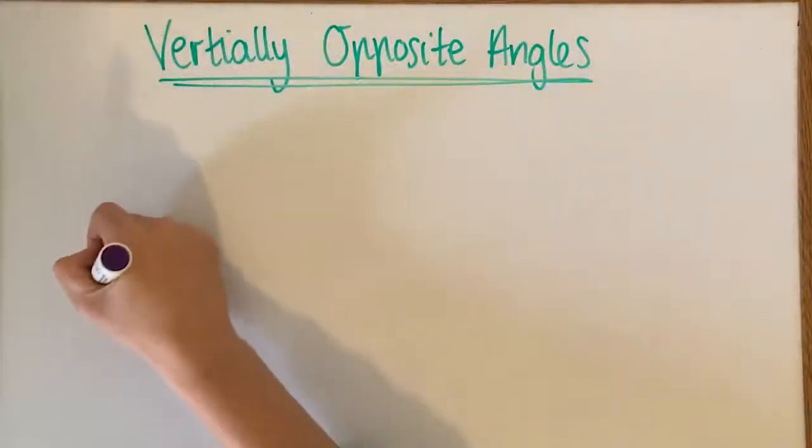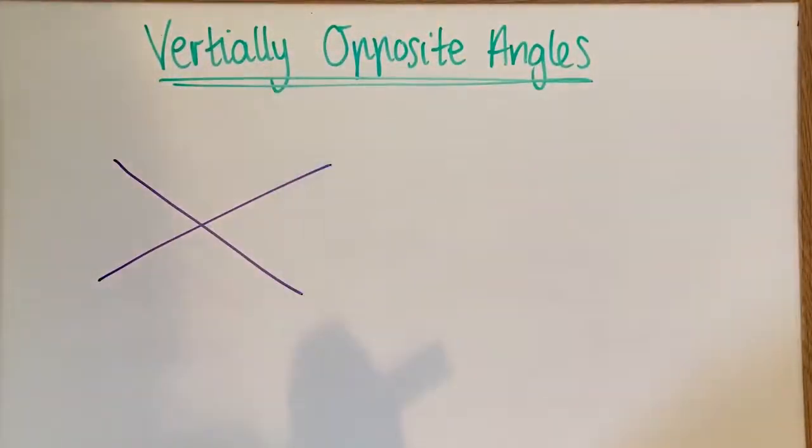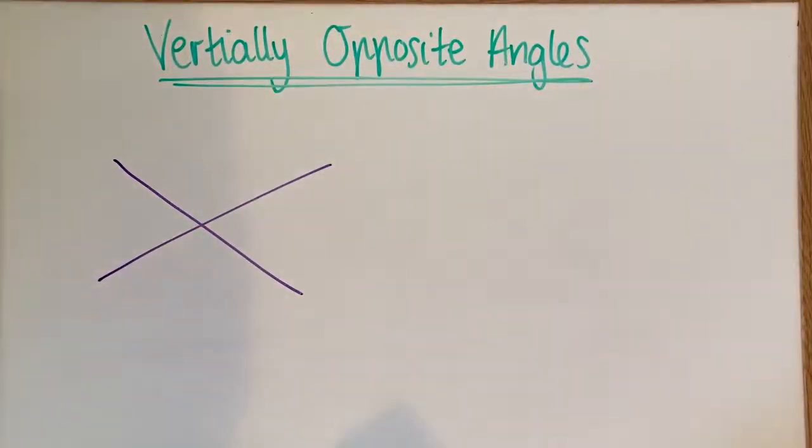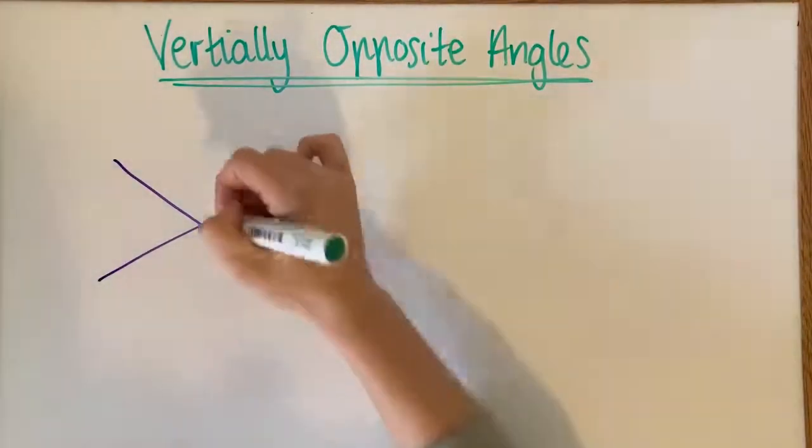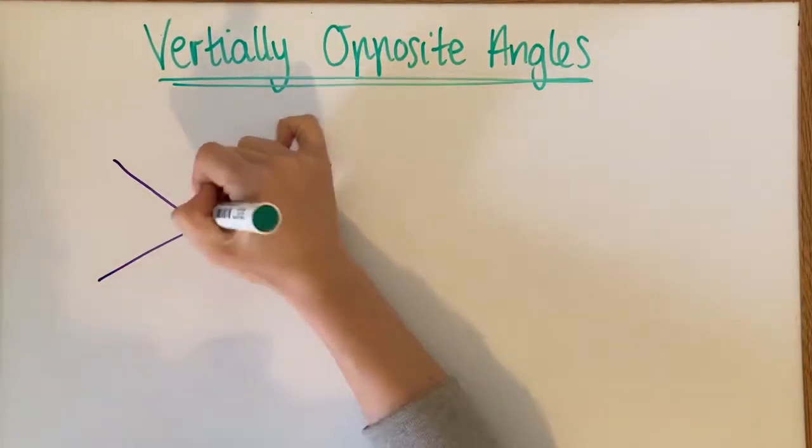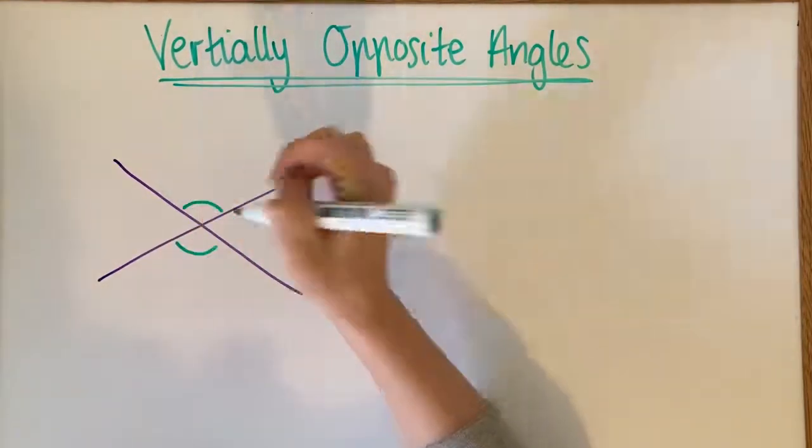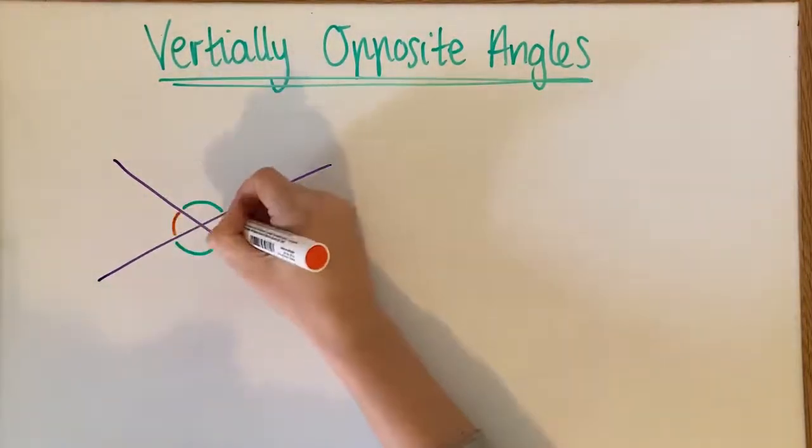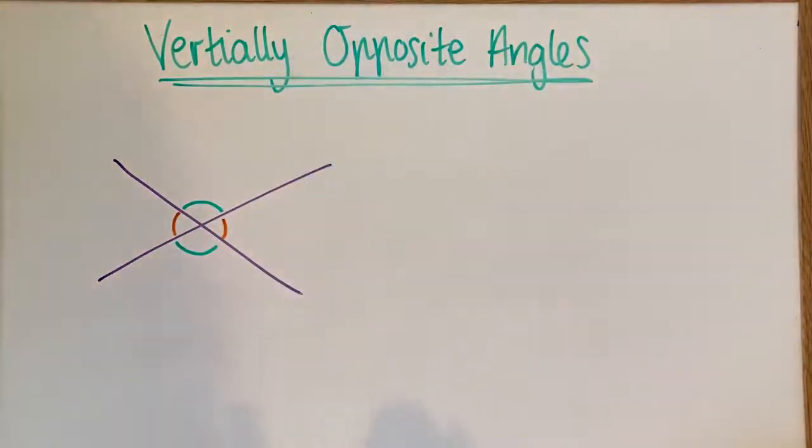Okay, so the term vertically opposite is in reference to when two straight lines cross and the angles opposite each other are always equal. So this angle will be equal to this angle and this angle will be equal to this angle. That will always be true for vertically opposite angles.